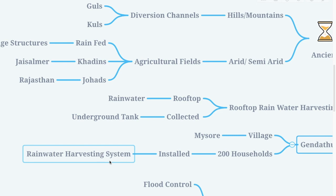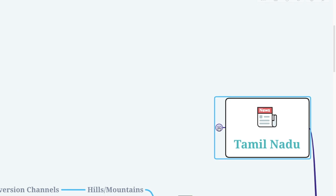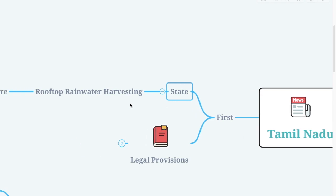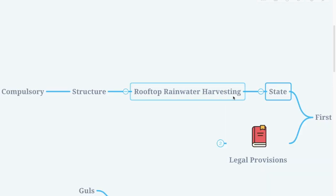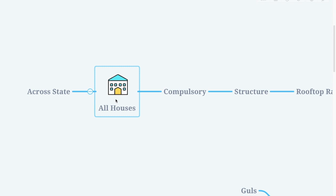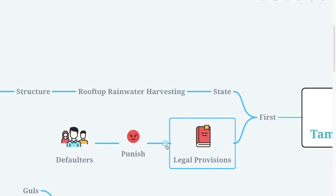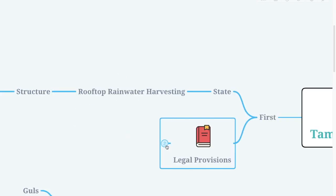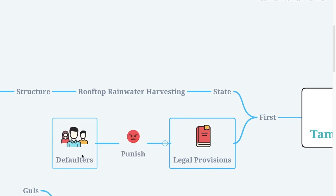Tamil Nadu is the first state in India where rooftop rainwater harvesting was made compulsory for all houses across the state. Legal provisions were made for this, and anyone who defaults or doesn't install it is bound to be punished.